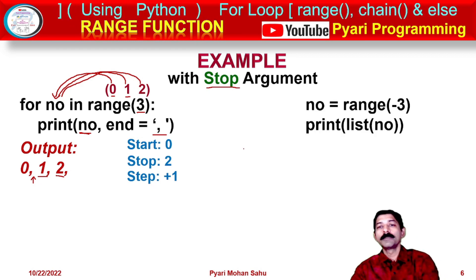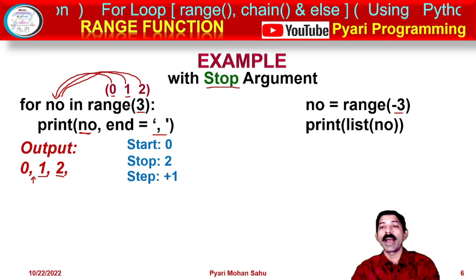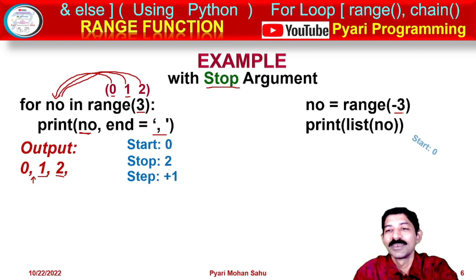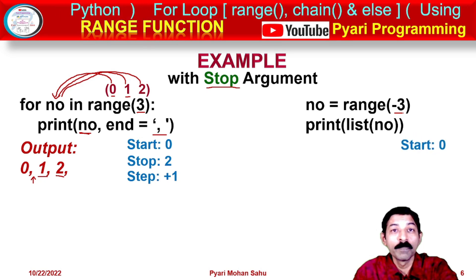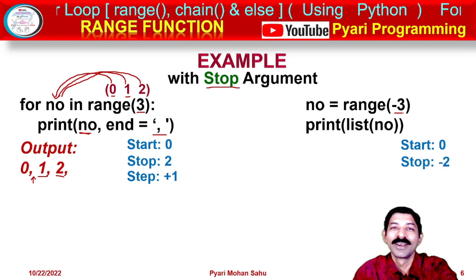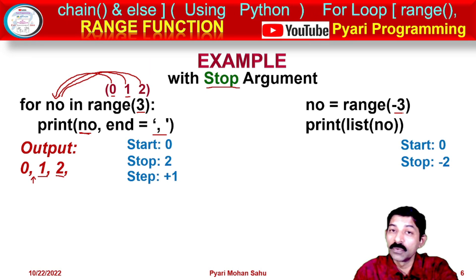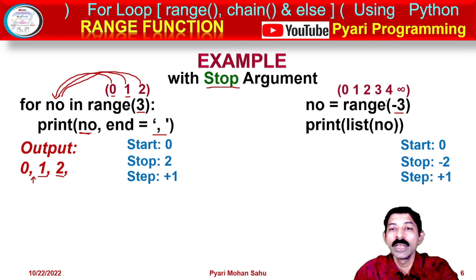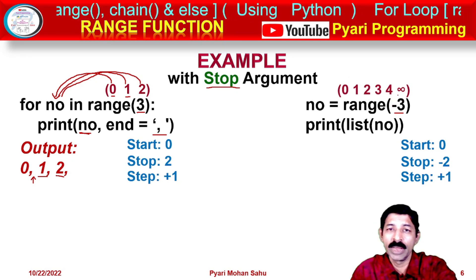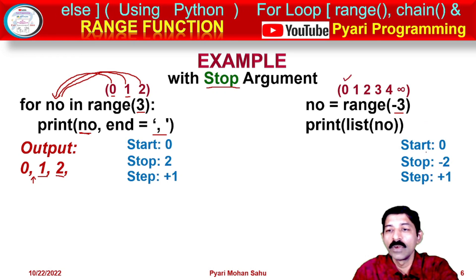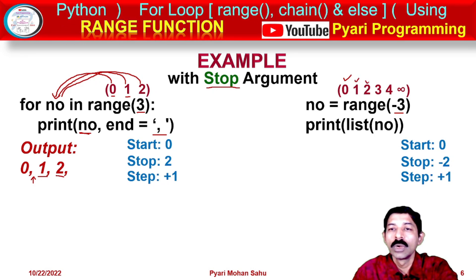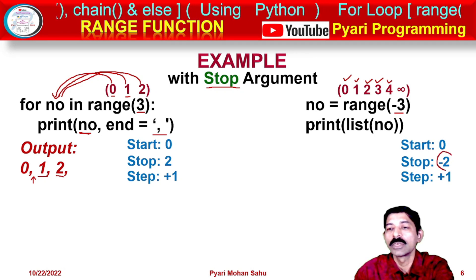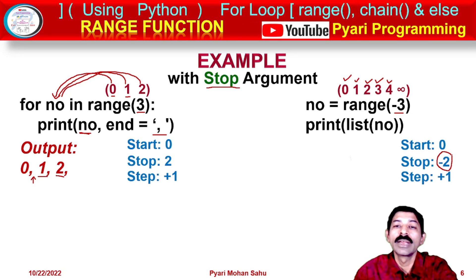Next example: no = range(-3). Start defaults to 0, stop would be -2 (-3 is excluded), step defaults to +1. Starting from 0 with +1, we go 0, 1, 2, 3, 4... it never reaches -2. So with a 0 or negative stop value with the default positive step, you will not get any output because it becomes a never-ending sequence.